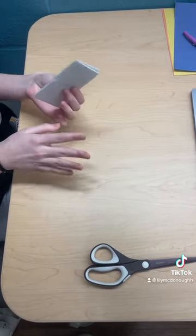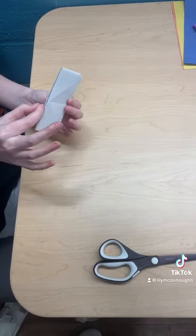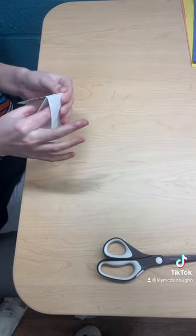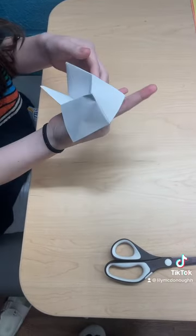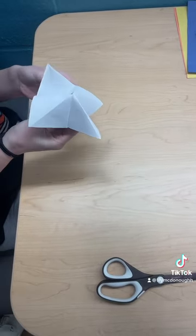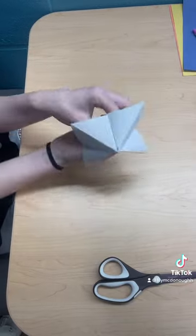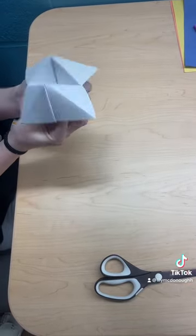This part is always tricky. You see how these come out. You're going to take your thumb and your pointer finger and put them in there like that, and do the same with the other hand. It's a little tricky. Now you have your fortune teller.